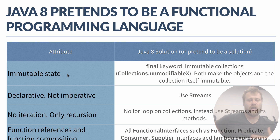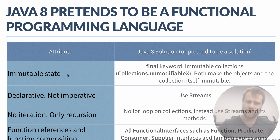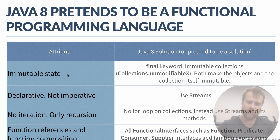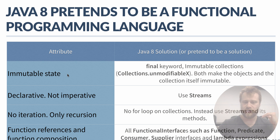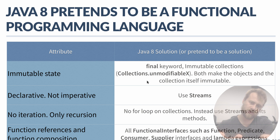Let's talk about how Java 8 implements functional programming elements. Java 8 is not a functional programming language, but it tries to implement functional programming items — at heart it's still object-oriented programming. For immutable state, we have the final keyword and the Collections class since Java 6. The final keyword prevents modifying the address of a reference.